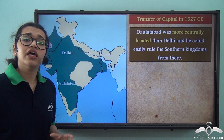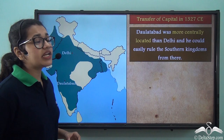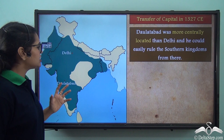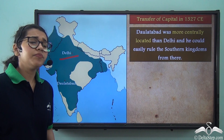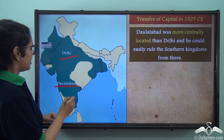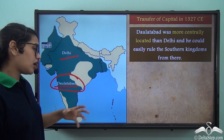The next decision was to shift his capital in 1327 CE. Looking at the map of India, Delhi was the capital at that time. However, he decided to shift his capital from Delhi to Daulatabad, also known as Devagiri. He thought that ruling from Daulatabad would give him control over the southern regions of the empire, which you can see marked on the map.